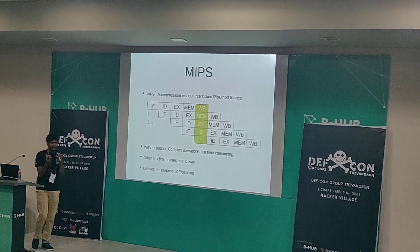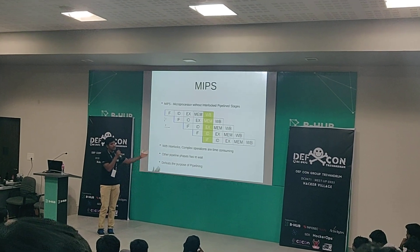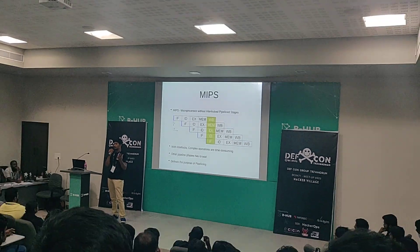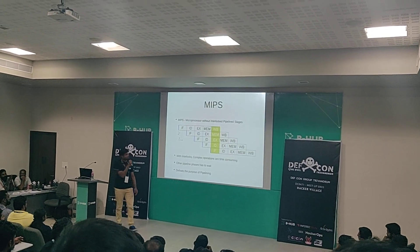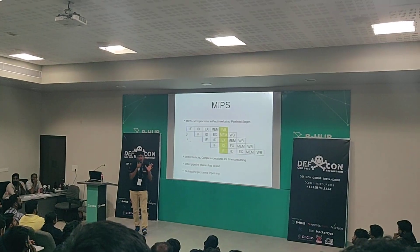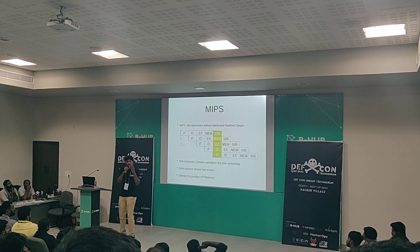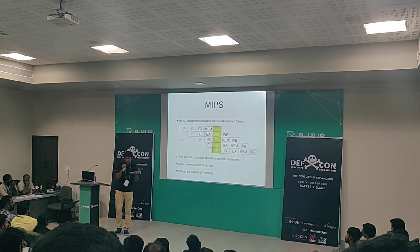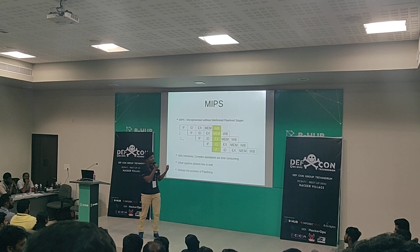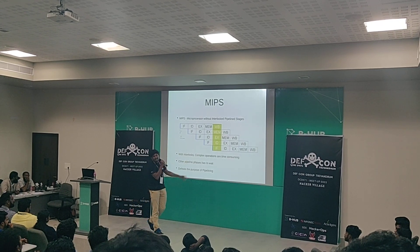Before generating the payload we must understand the MIPS architecture. MIPS stands for Microprocessor Without Interlocked Pipeline Stages. Since I'm speaking about MIPS I have to speak about computer architecture, which is basic for reverse engineering. A pipeline has two types: a three-stage pipeline and a five-stage pipeline. The five-stage pipeline has instruction fetch, instruction decode, execution, memory read, and write-back — those are the five stages.